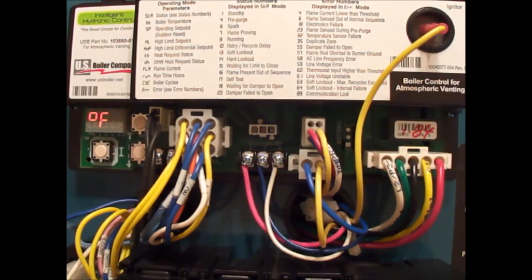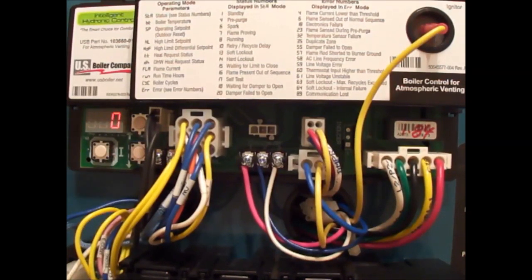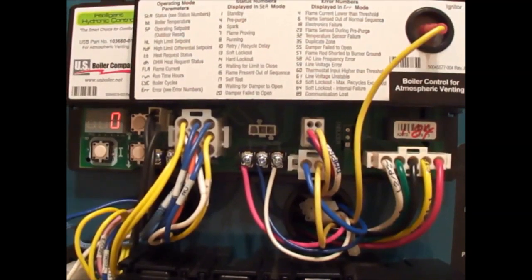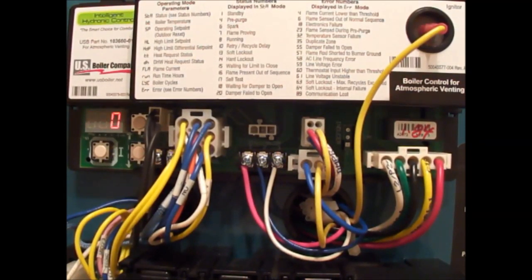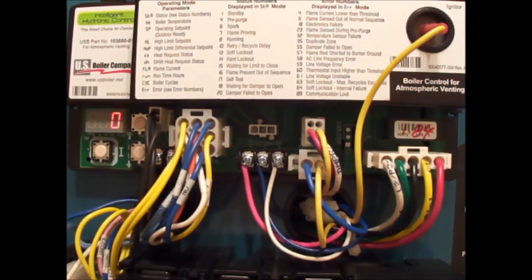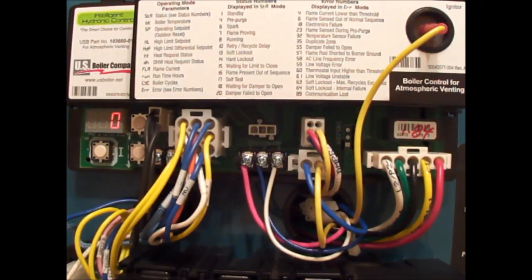We hit it again, we have OR. OR means pump overrun. This would be pump post purge. You created the heat in the boiler, thermostat satisfied. We can keep the circulator running a little bit longer to take that heat that you created and put it out in the house. This helps to save fuel.